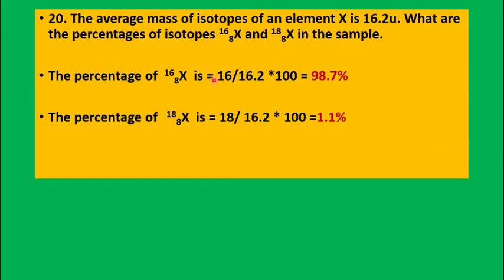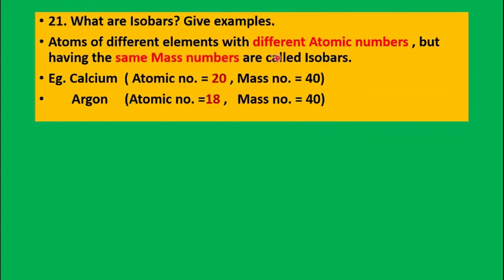To find the percentage of each isotope of an element X with average mass 16.2: one isotope (mass 16): 16 ÷ 16.2 × 100; another isotope (mass 18): 18 ÷ 16.2 × 100. Isobars are elements with different atomic numbers but the same mass number. Example: calcium (atomic number 20, mass 40) and argon (atomic number 18, mass 40) — both have mass number 40. These are isobars.